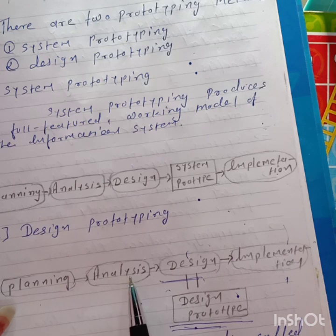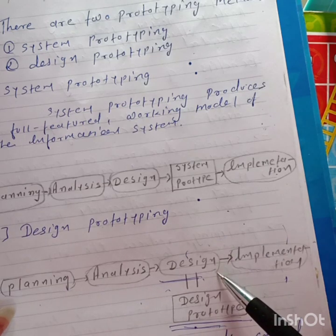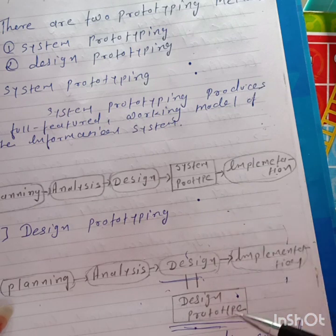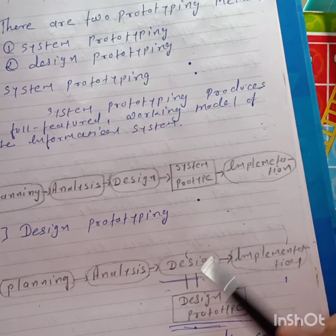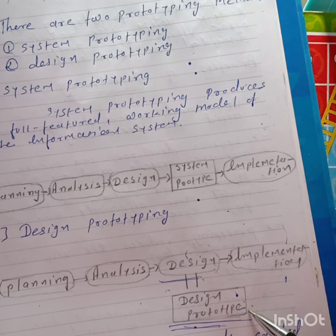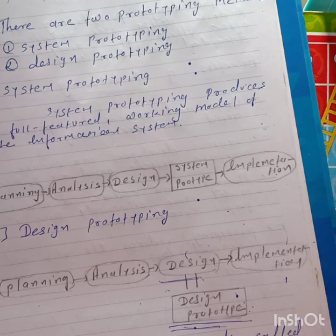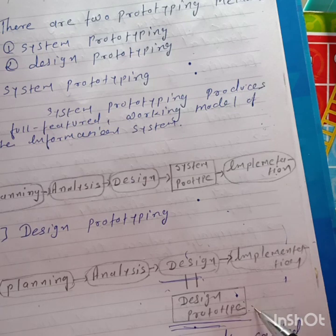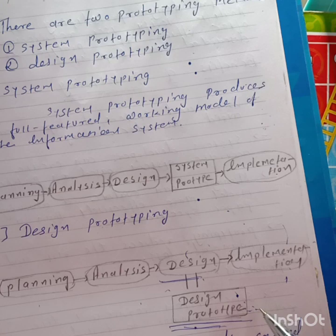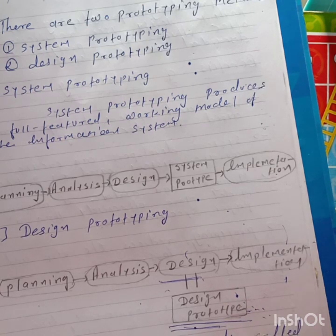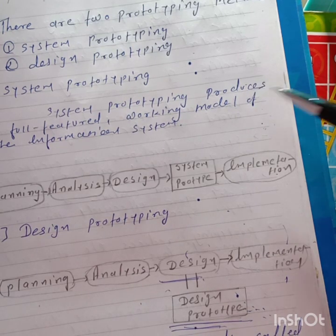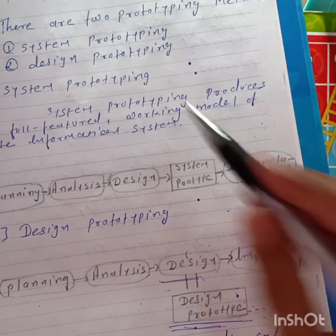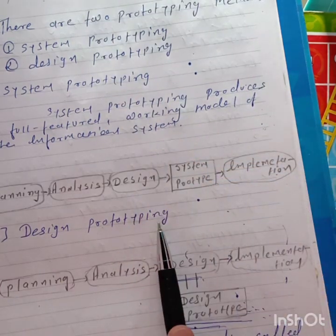In design prototyping, the system analyst plans, analyzes, and designs the prototype, then asks the user to approve it. If the user likes the prototype, it will be implemented. If the user needs any changes, it can be changed or discarded. That is the difference between system prototyping and design prototyping.